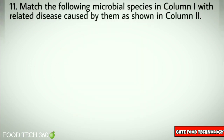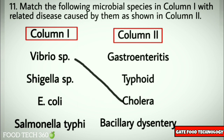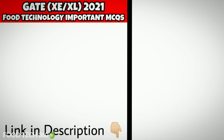Question number eleven: Match the following microbial species in column one with related disease caused by them in column two. Vibrio species corresponds to cholera; Shigella species corresponds to bacillary dysentery; E. coli corresponds to gastroenteritis; Salmonella typhi corresponds to typhoid.